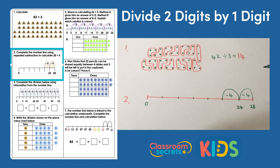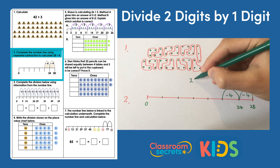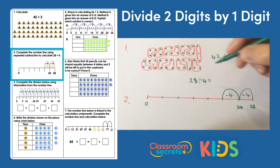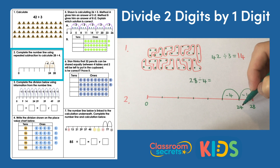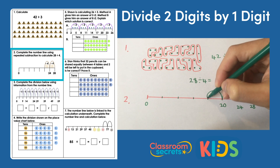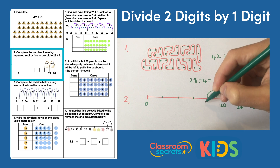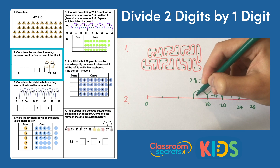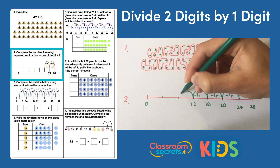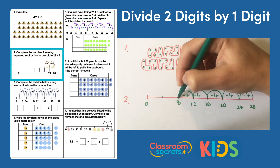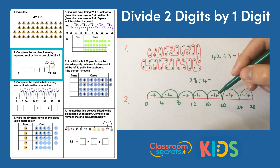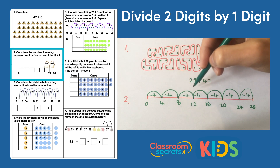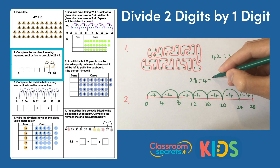Number two asks us to complete the number line using repeated subtraction to calculate 28 divided by 4. We've already been given a start: 28 take 4 is 24, 24 take 4 is 20. Carrying on: 20 take 4 is 16, 16 take 4 is 12, 12 take 4 is 8, 8 take 4 is 4, and 4 take 4 is 0. Counting the jumps: one, two, three, four, five, six, seven — so 28 divided by 4 is 7.